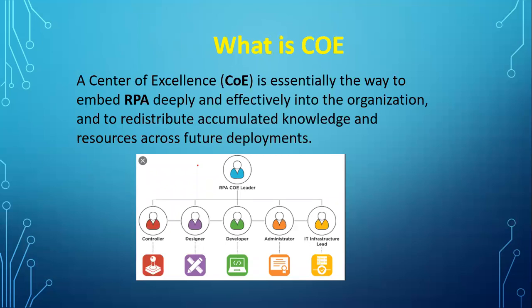The BA creates the Process Design Document and manages the sign-off of the PDD. Once the PDD is complete, the solution architect creates the SDD (Solution Design Document). Both documents are stored in the CoE repository. The BA then moves to the estimation stage, where he assesses whether a process is low, medium, or complex, based on his experience and tool limitations, and confirms the estimations with the solution team before getting approvals.